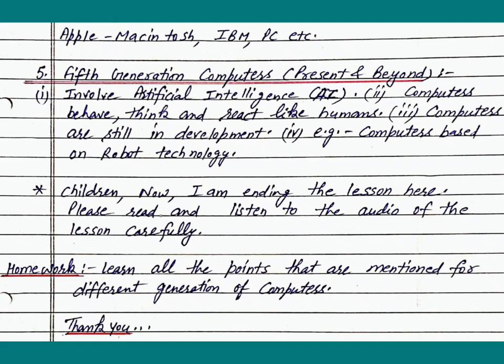Number 5: Fifth generation computers — present and beyond. Point 1: Involve artificial intelligence. Point 2: Computers behave, think and react like humans. Point 3: Computers are still in development. Point 4: For example, computers based on robot technology.